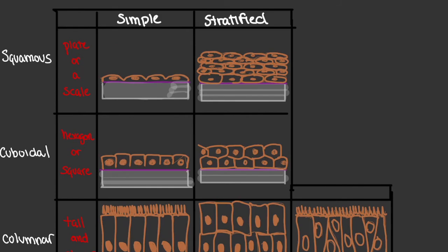It's possible to have an epithelium we classify as simple squamous — one layer, plate or scale-like in appearance. For number two, it's possible to have a stratified squamous epithelium, meaning multiple layers that are also plate or scale-like in appearance. For number three, a simple cuboidal epithelium has one layer of cells that is hexagon or square-like in appearance. And for number four, a stratified cuboidal epithelium has multiple layers of cells that are hexagon or square in appearance.